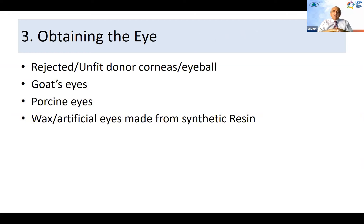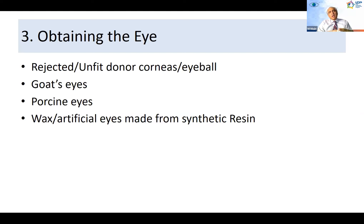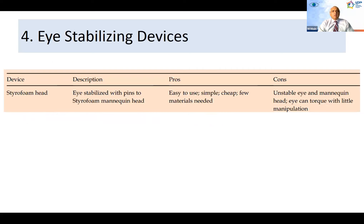The next step is obtaining the eye. You can use a rejected or unfit donor cornea, a goat's eye, porcine eyes, or VACS artificial eyes made from synthetic resins. Sometimes some places will have restrictions because of transmissible diseases, and goat's or porcine eyes may not be feasible or allowed, so you can use VACS or artificial eyes.